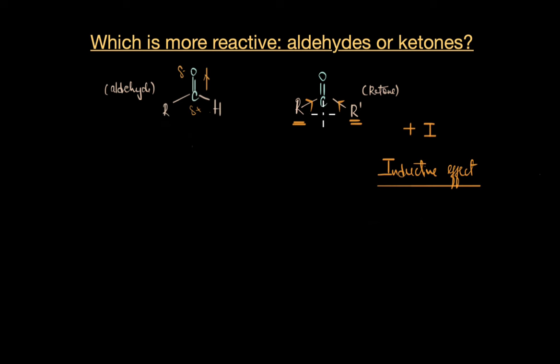So essentially the carbonyl carbon acts as a minor or smaller form of an electronegative atom, and like any other electronegative atom, it draws electron density from the adjacent groups. And what happens when we have two alkyl groups here? Both alkyl groups donate electron density to the carbonyl carbon and decrease the overall electrophilicity of it. As a result, they become less attractive for a nucleophile to attack.